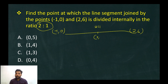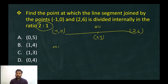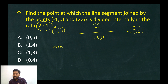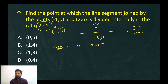The point divides the segment internally in ratio m to n, which is 2 to 1. Using the section formula: x equals mx2 plus nx1 divided by m plus n.